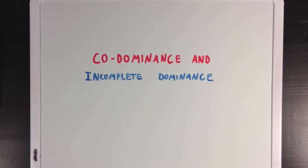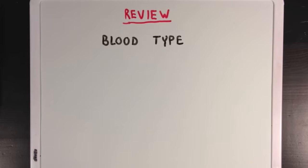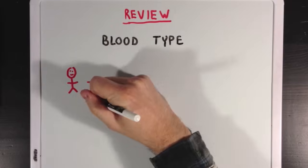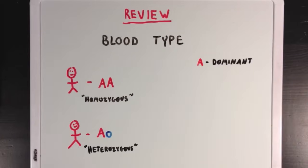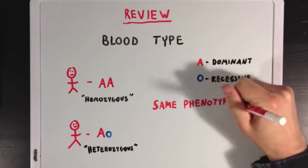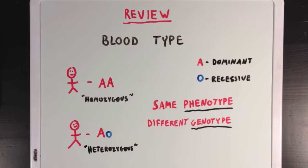Today we're going to talk about codominance and incomplete dominance. But first, let's review the example of blood type, and how someone with the same two alleles coding for the same trait would be called homozygous, and someone with different alleles would be called heterozygous. Also remember the concept of dominant and recessive alleles, and how the A allele is dominant over the O allele — meaning the same phenotype, blood type A, can result from two different genotypes.